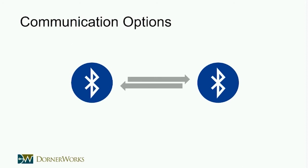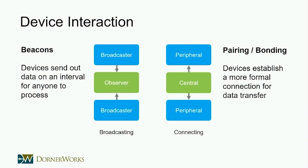There are two main modes of Bluetooth device interaction. The first is the observer-broadcaster relationship, commonly referred to as beacons: devices send out data at a fixed interval as broadcasters, and any observer can scan and listen for those advertisements. Think of a cell phone observing a sensor beaconing out temperature data — you don't have to connect, you're just passively listening. The second mode is actual connection: like connecting your phone to a heart rate monitor, with central and peripheral roles.